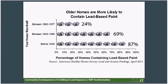The older the home is, the more likely it is to contain lead-based paint. Nearly 90% of homes built before 1940 contain lead-based paint. Think about the homes in your community. While intact lead-based paint is not a hazard, if it's there — even under layers of other paint — once someone disturbs the paint, whether accidentally or on purpose, as happens during home repairs, that lead paint will start to chip, flake, chalk, and dust, and then there is a lead paint hazard.